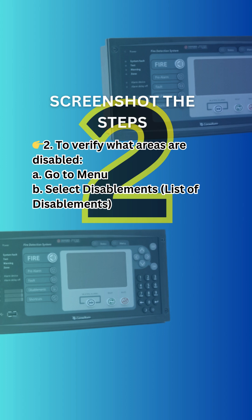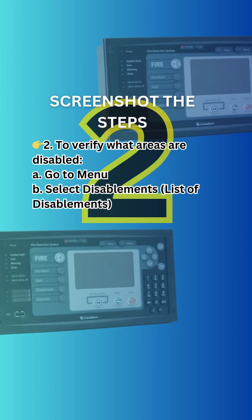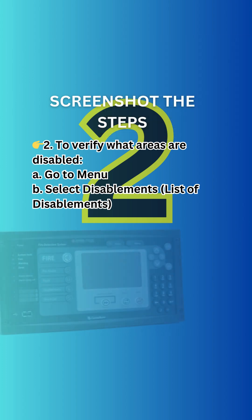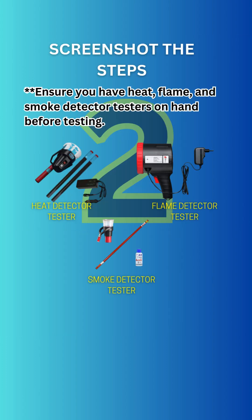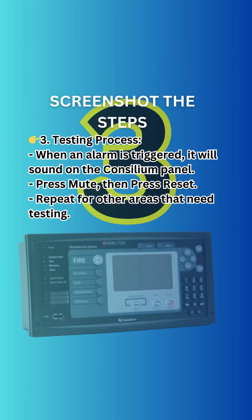To verify what areas are disabled, go to menu, select disablements, then list of disablements. Ensure you have heat, flame, and smoke detector testers on hand before testing.